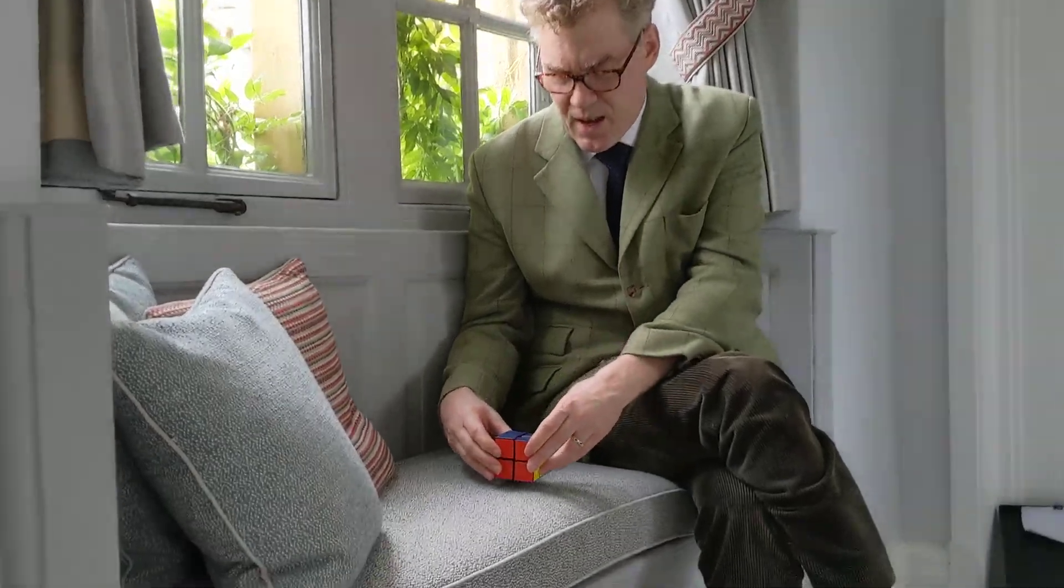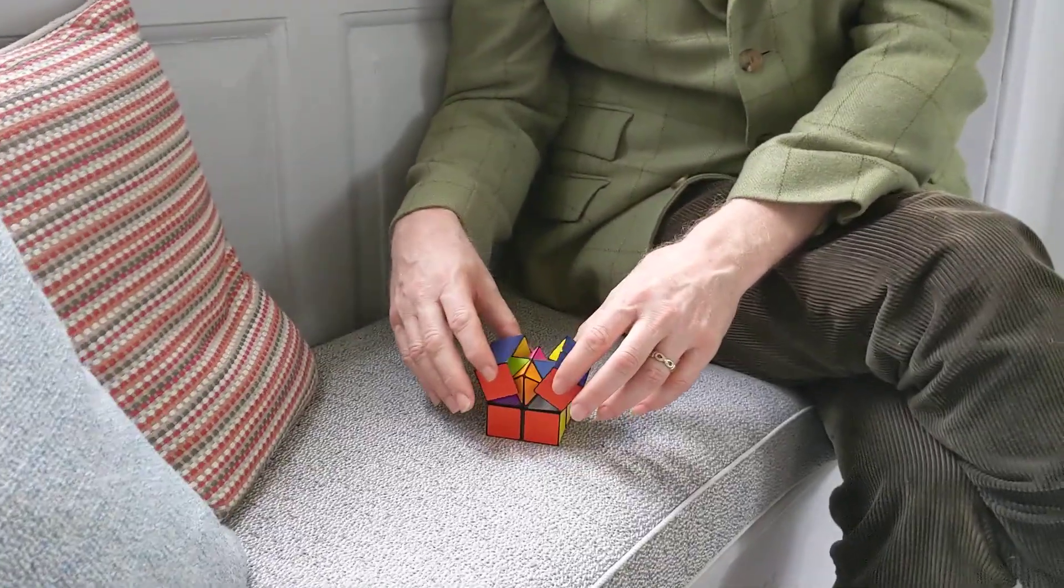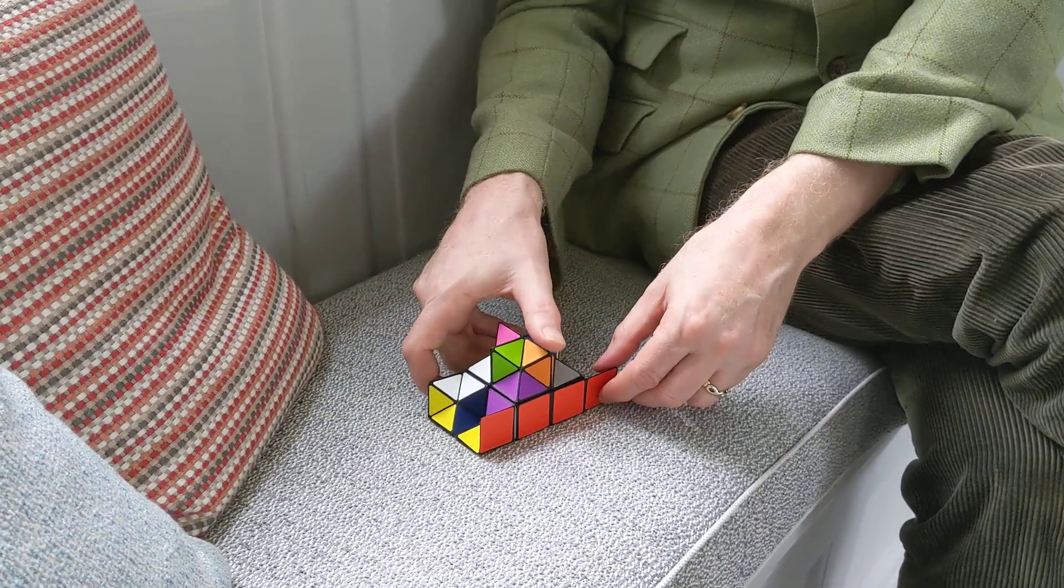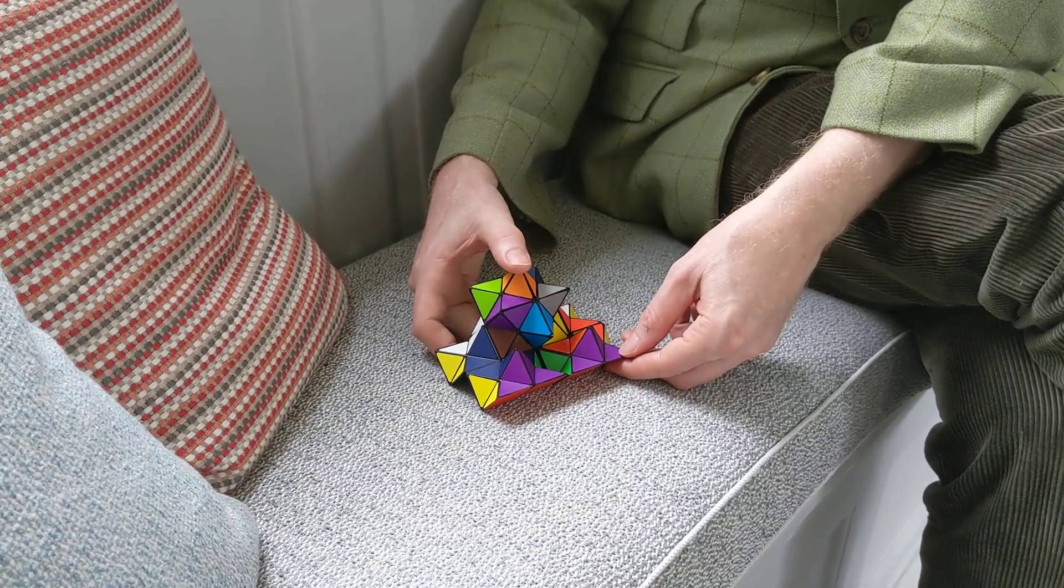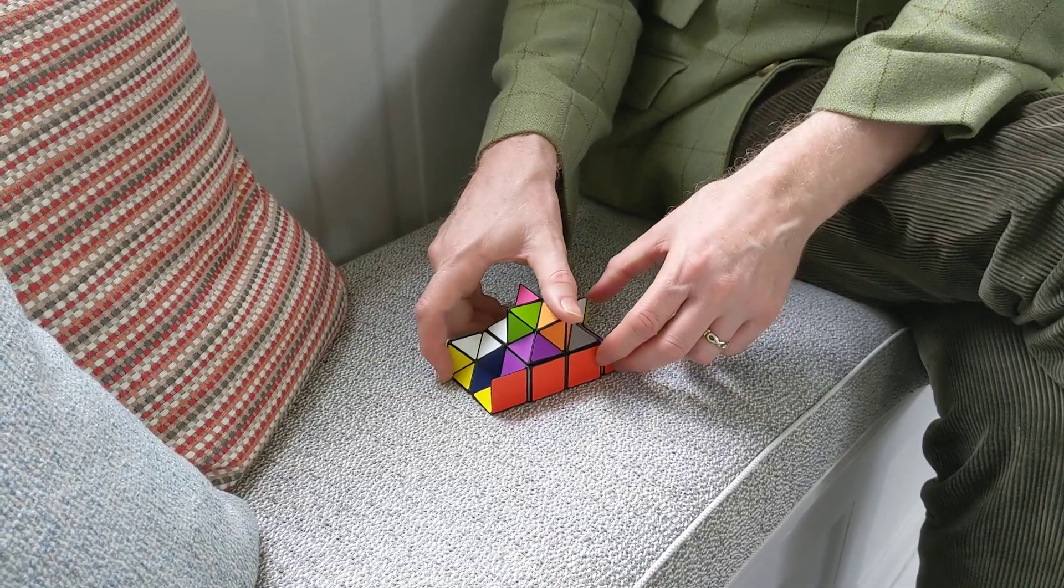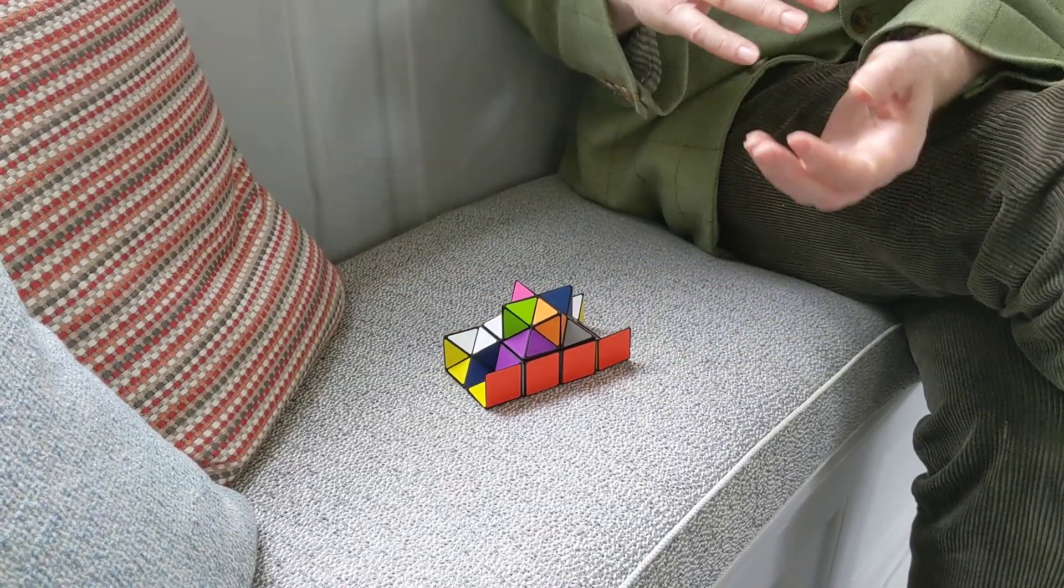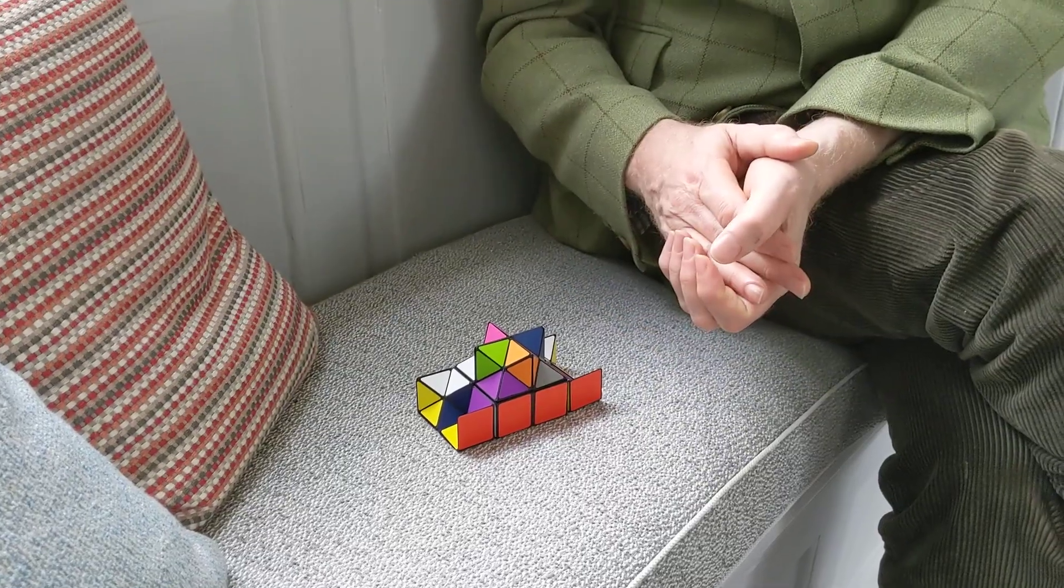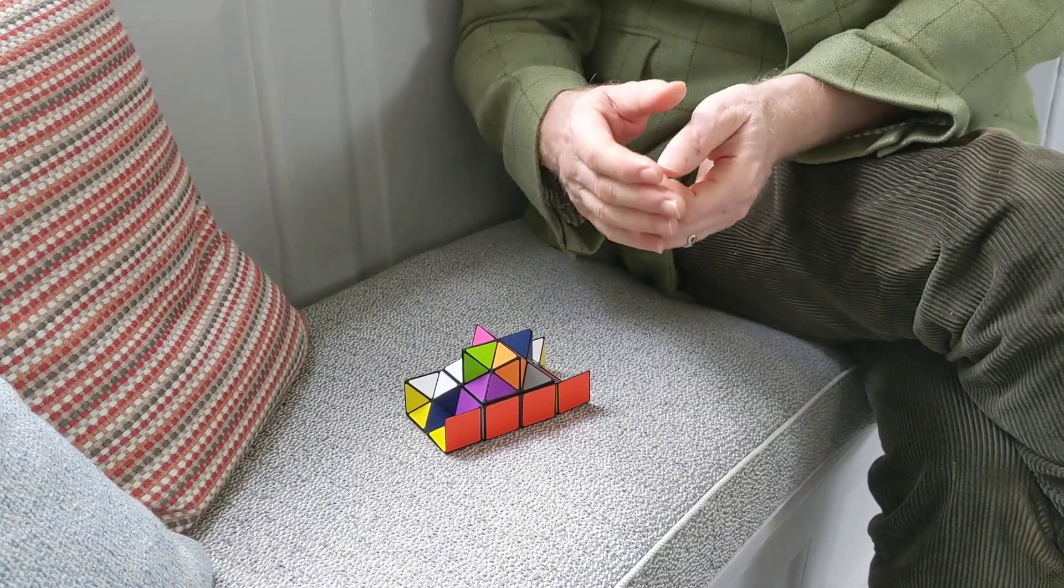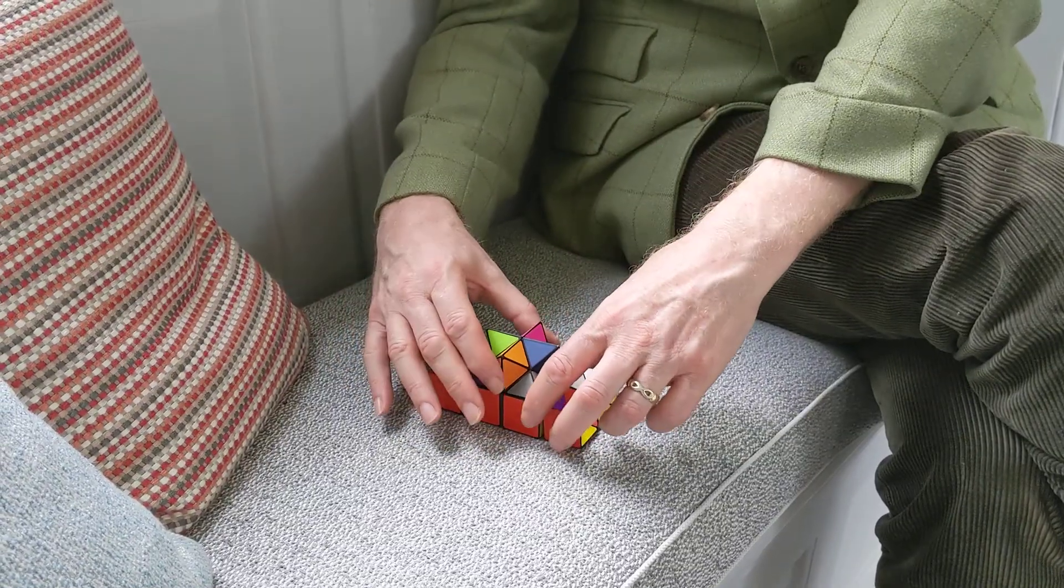But there's another principle that we have in mathematics called the axiom of choice. And the axiom of choice has a remarkable consequence called the Banach-Tarski paradox. What the Banach-Tarski paradox says is that you can divide the unit ball in three-space into finitely many pieces, and if you do it very carefully and divide those pieces into two groups,